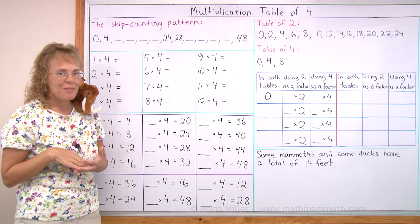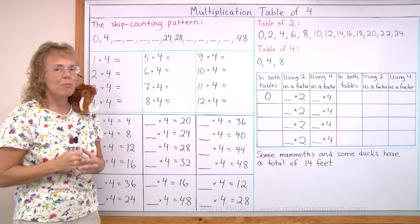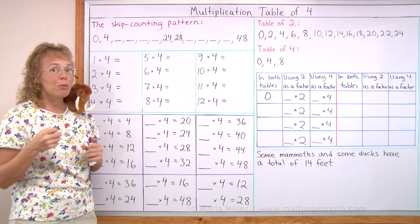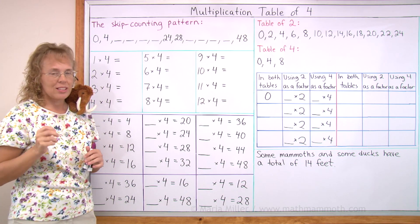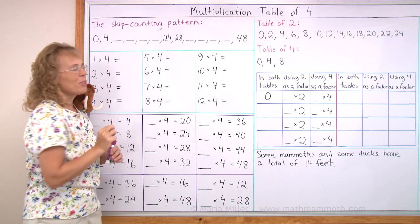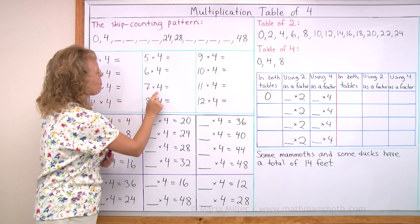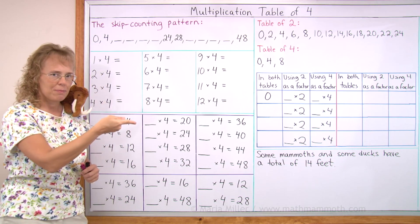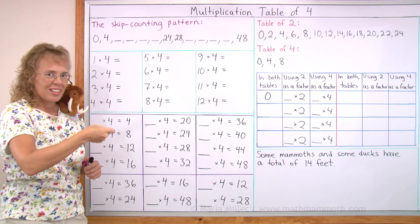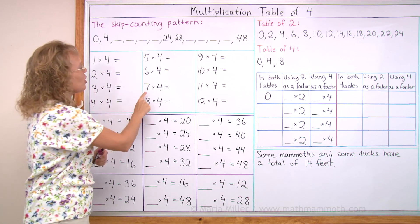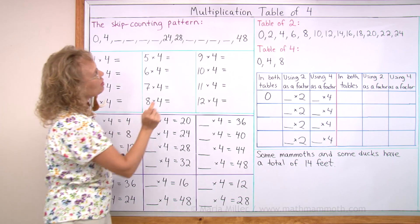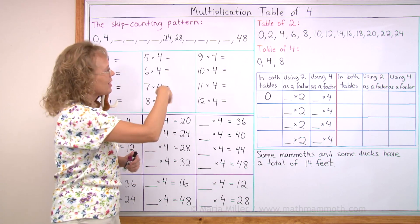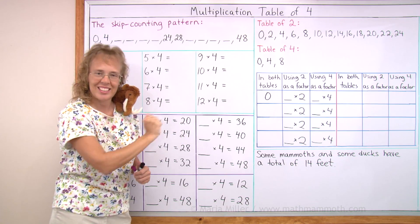I also want to show you a trick you can use with the multiplication table of 4, and that has to do with doubling. With the table of 2 we could double. With the table of 4 we can double twice. For example, 7 times 4: take 7 and double it — 14 — and double it a second time — 28. So 7 times 4 is 28. Or 9 times 4: take 9, double it to get 18, and double again to get 36.